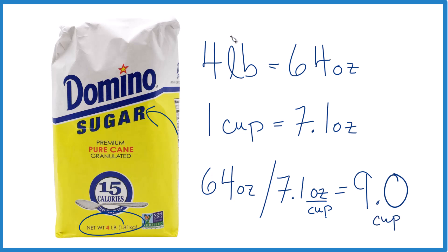In answer to our question, if we have a four-pound bag, it's 64 ounces. One cup is 7.1 ounces, so we end up with 64 divided by 7.1 ounces. They cancel out. We're left with cups here. Nine cups in a four-pound bag of granulated sugar.